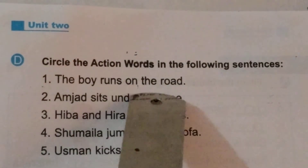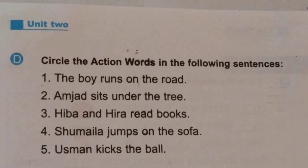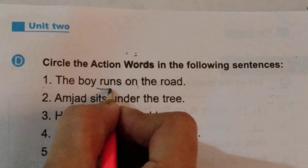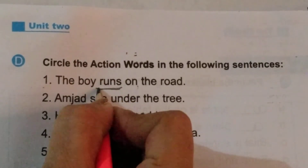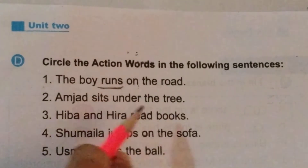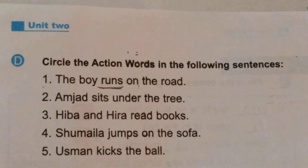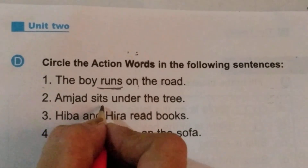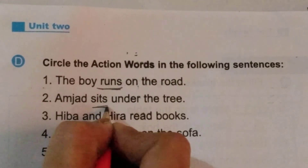The boy runs on the road. What does the boy do on the road? Runs. So we will underline 'runs' because it is the action word. Amjad sits under the tree. What does Amjad do under the tree? His action is sits — yes, Amjad sits under the tree.